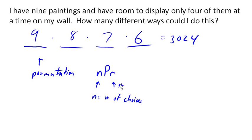R is the number we pick from our total number of choices. So this problem here would be 9P4. We have 9 choices and from them, we're going to pick 4 of them and look at all the possible orderings or permutations of them.